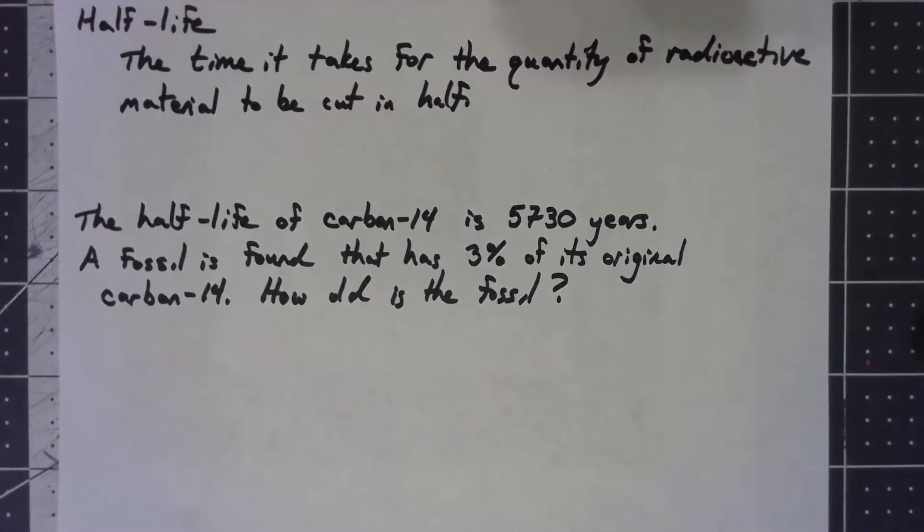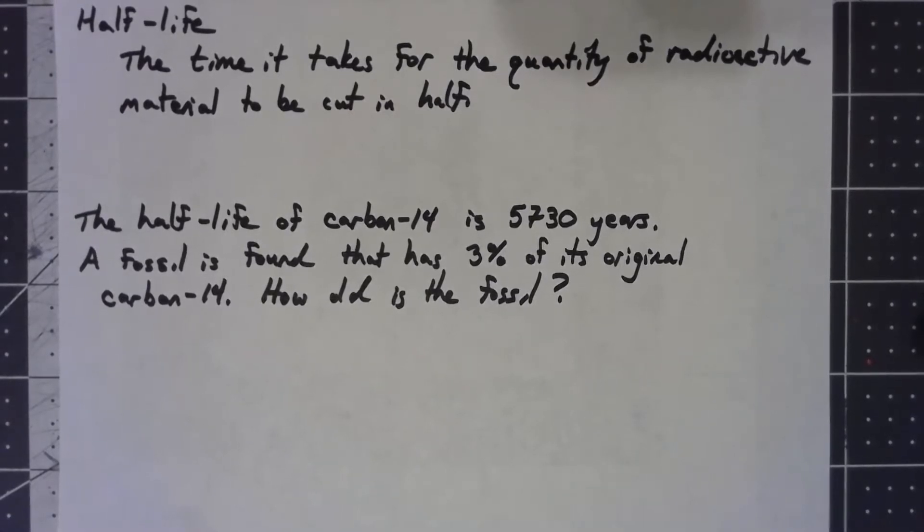So what the half-life is, it's the amount of time it takes until there's only half as much radioactive material as what you started with. If you start with 100 grams, after one half-life there'll be 50 grams left. After another half-life there'll be half again, so half of 50, 25 grams left, and so on.